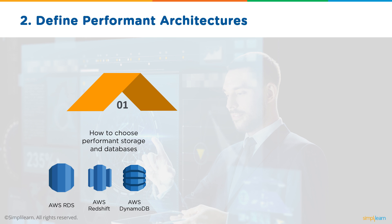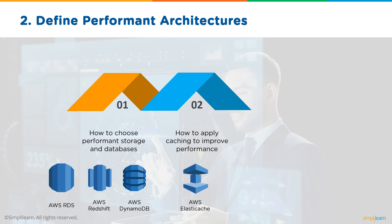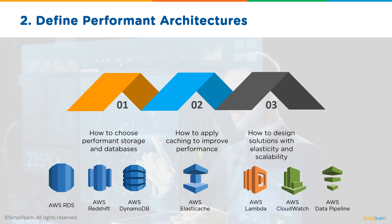For the second domain — defining performant architectures — you need to know how to choose performance storages and databases using AWS RDS, AWS Redshift, and AWS DynamoDB; how to apply caching to improve performance using AWS ElastiCache; and how to design solutions with elasticity and scalability using AWS Lambda, AWS CloudWatch, and AWS Data Pipeline.